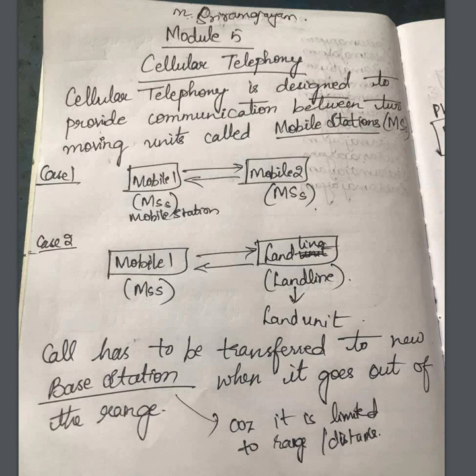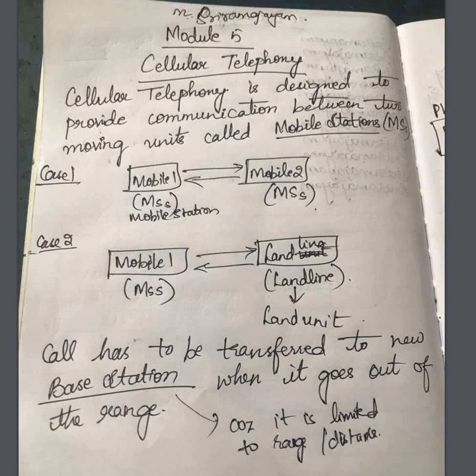Cellular telephony is designed to provide communication between two moving units called mobile stations. Before, we used to use landlines, which are not movable beyond a certain distance. But with mobiles, which are wireless, you can take them anywhere — that concept is called cellular telephony. It gives you communication for something which is moving, not restricted to one place.